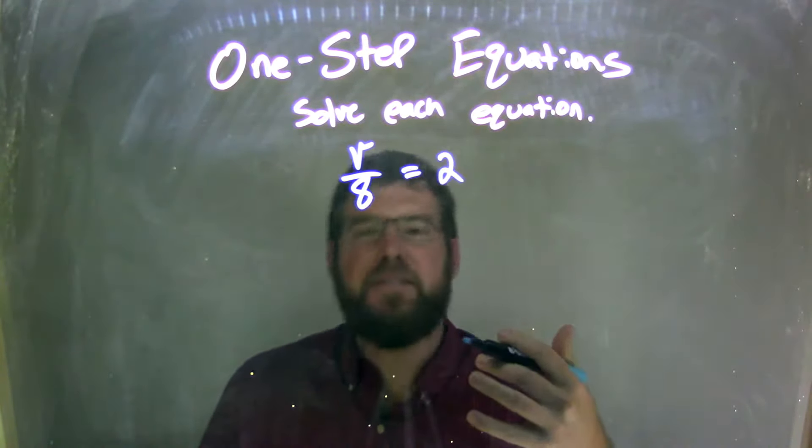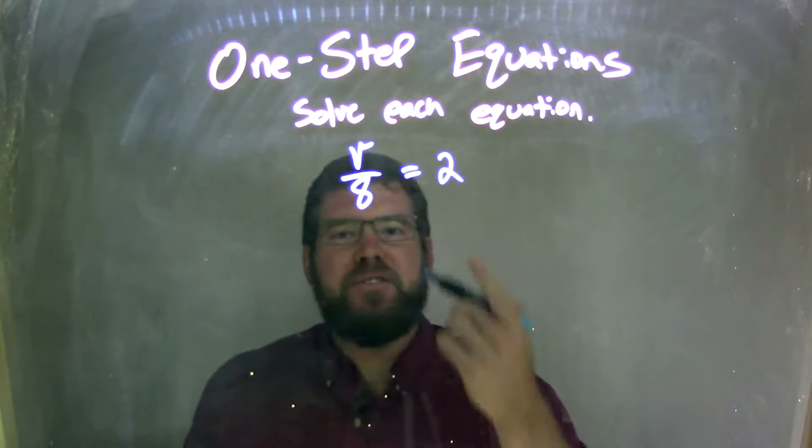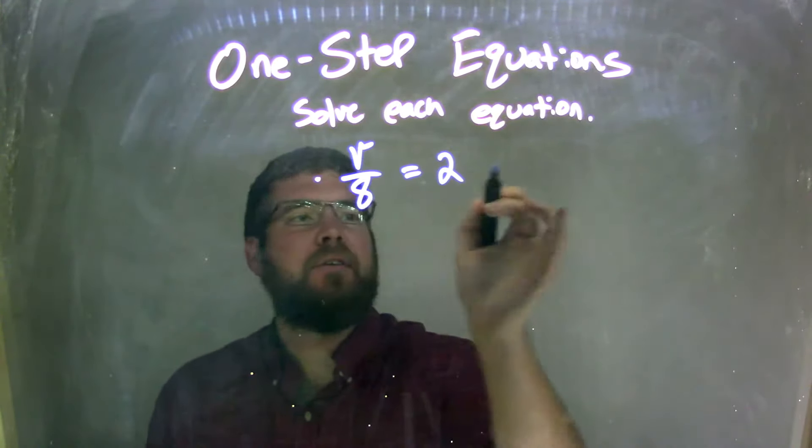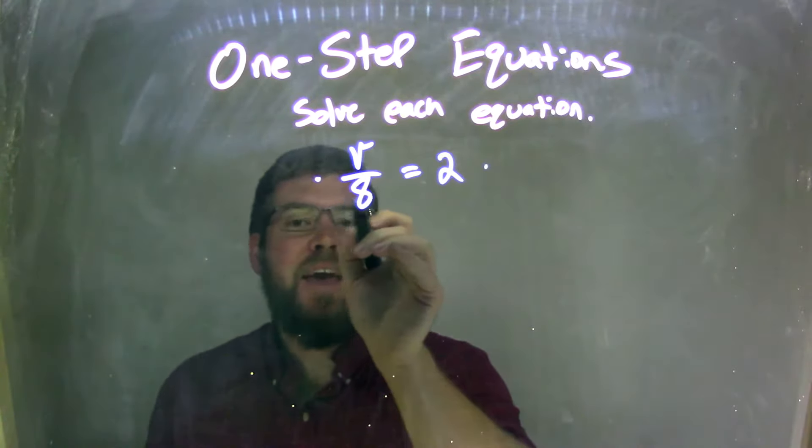So what's the opposite of division? Multiplication. So I need to multiply both sides by, in this case, 8. What's in the denominator?